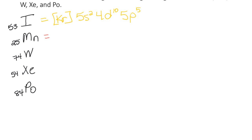Next, manganese — it's in the fourth row, so the end of the third row is argon. Starting at the beginning of the fourth row: [Ar] 4S2, 3D5. Adding electrons: argon has 18, plus 2 is 20, plus 5 is 25. Correct.